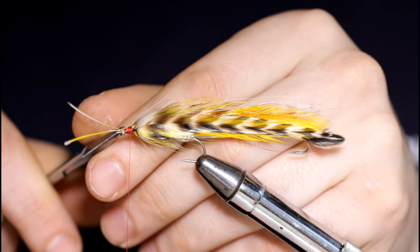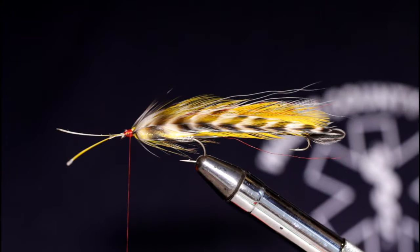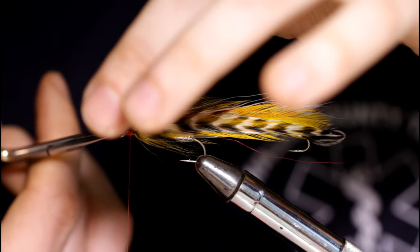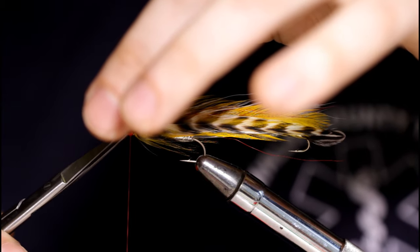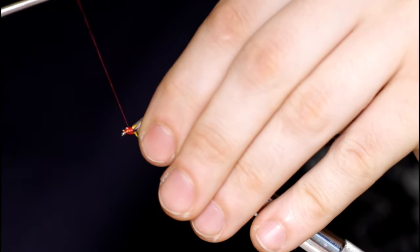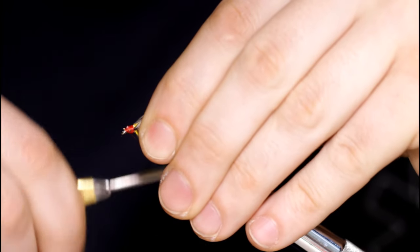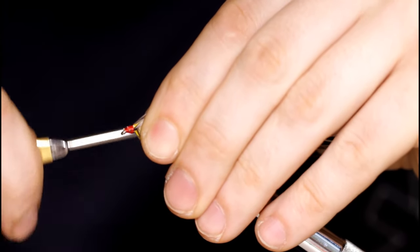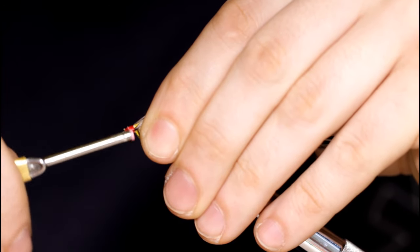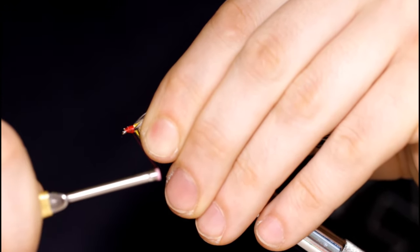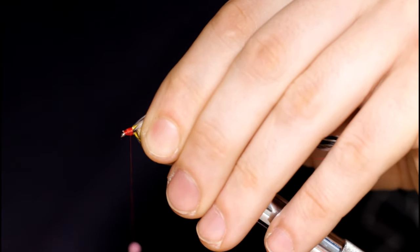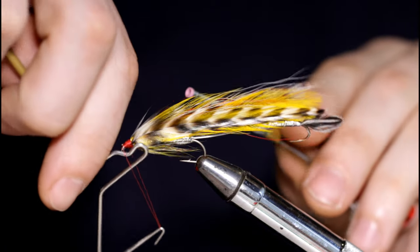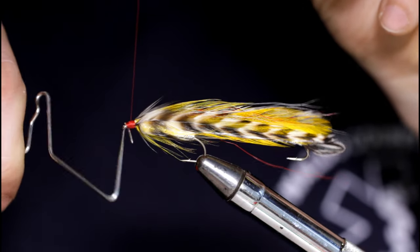Then you can either fold your stems back or snip them off. I'm going to snip them off. So now I'll clean this up a little bit with some red thread and get ready to tie the collar in. If I can just level this out a little bit it will tie in easier. And you can throw a whip finish in here if you're worried about your work coming undone.